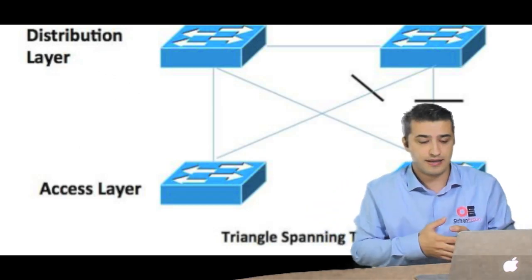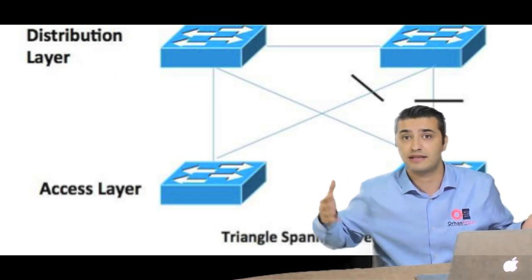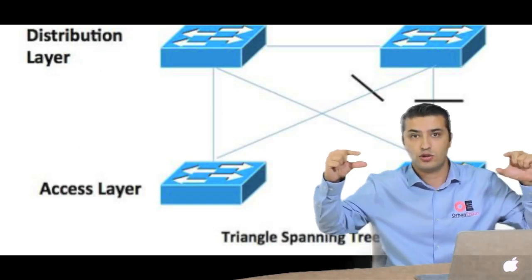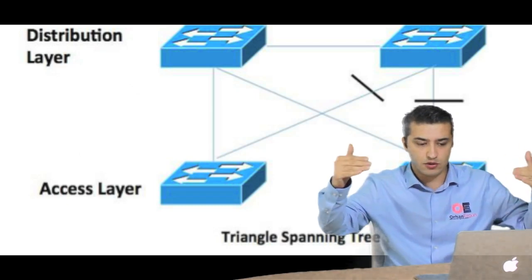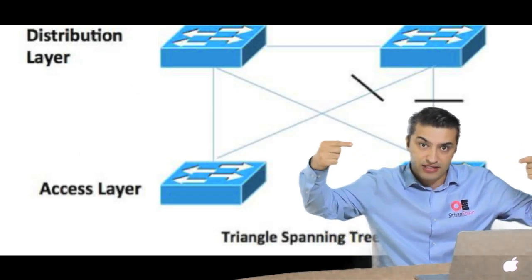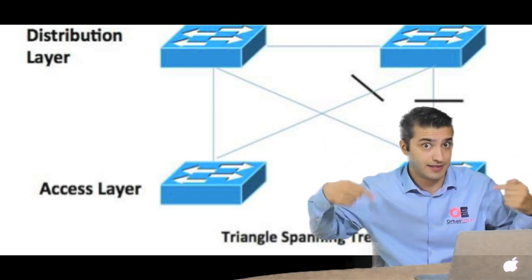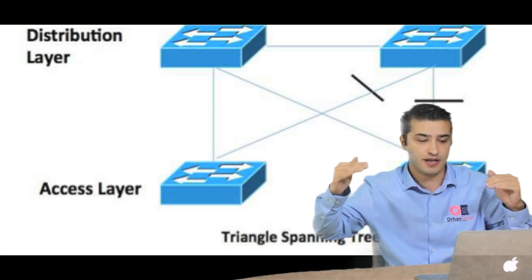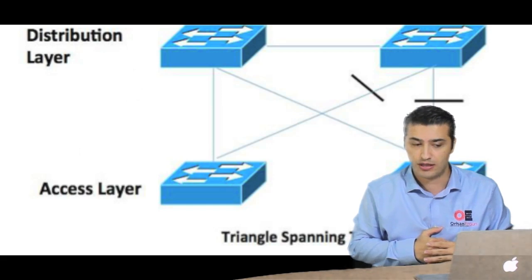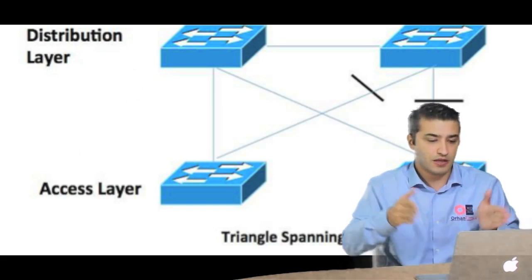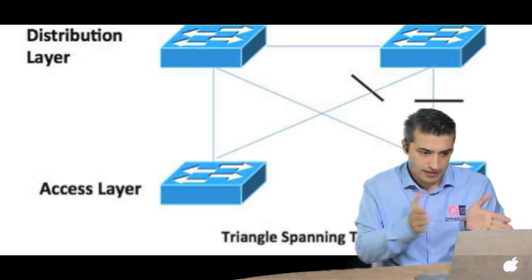And the distribution layer switches is used to terminate those access switches. So if you have, let's say, 5, 10, 20, 50 access switches, you can use the distribution layer for scalability. In this case, we have access and distribution layer. And if we have layer 2 links, not the layer 3 routing, IP addresses, but layer 2 link between the access and distribution layer switch, then we call it access layer design. In this case, we have layer 2 access design.